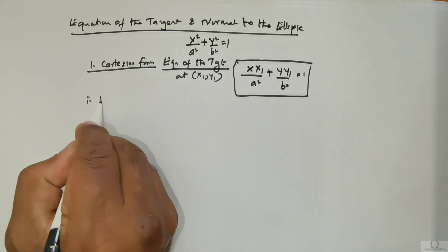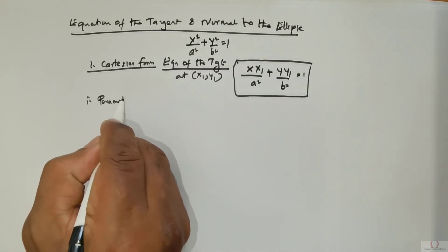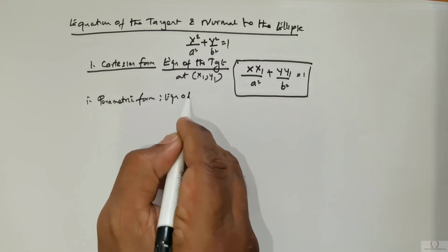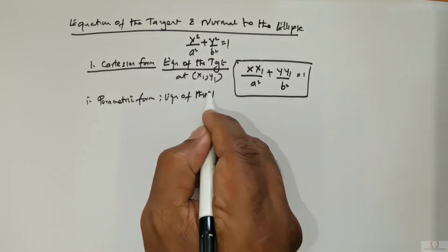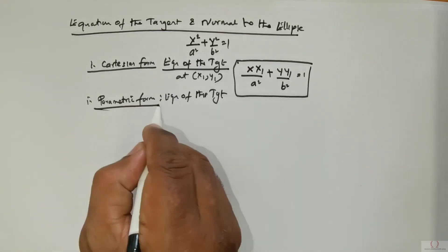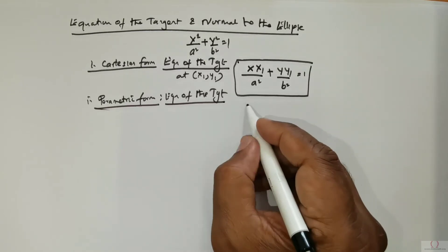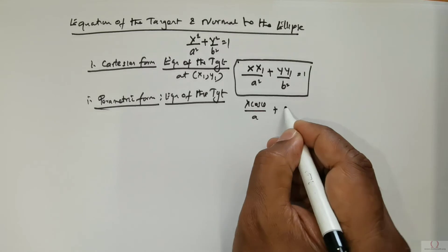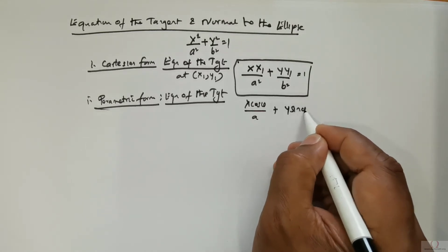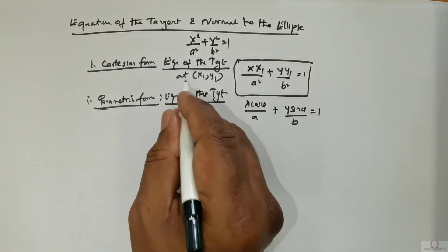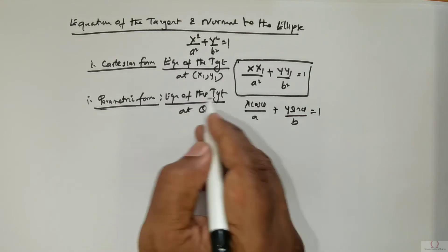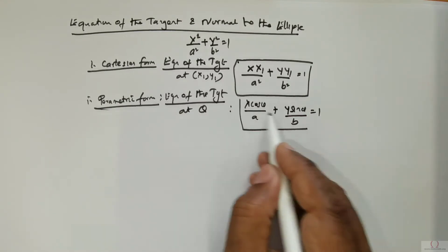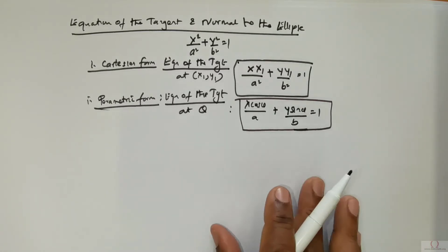In parametric form, the equation of the tangent is given as x cos theta over a, positive y sine theta over b, is equal to 1. This is the equation of the tangent at theta. This is very important.